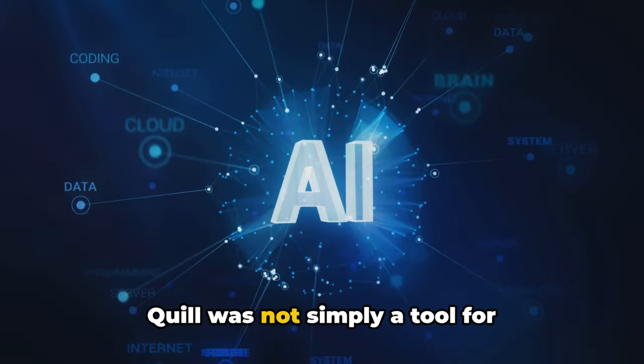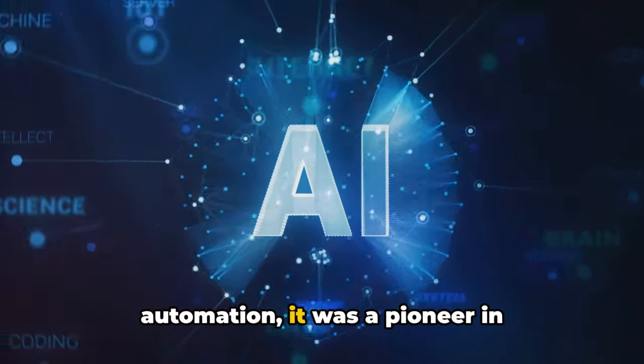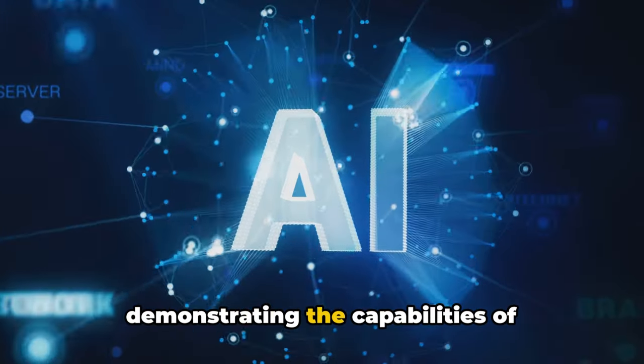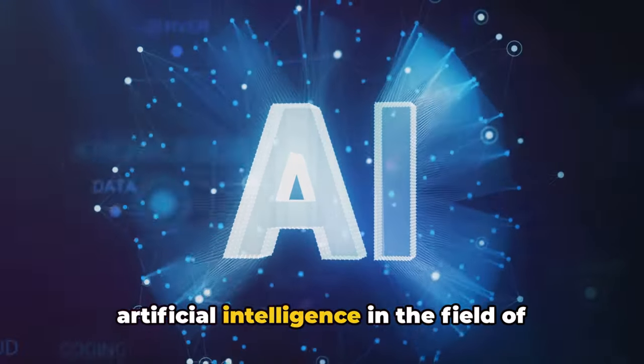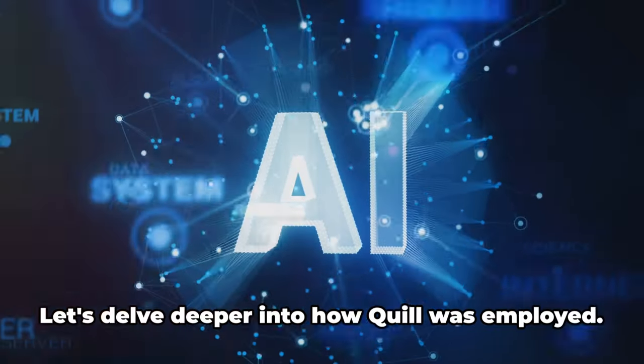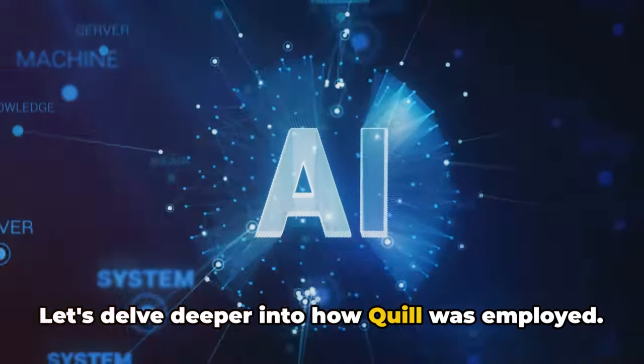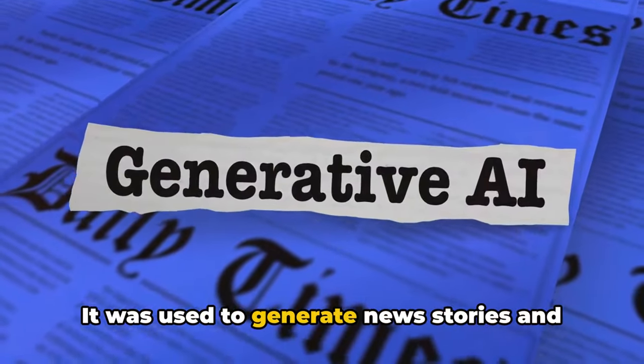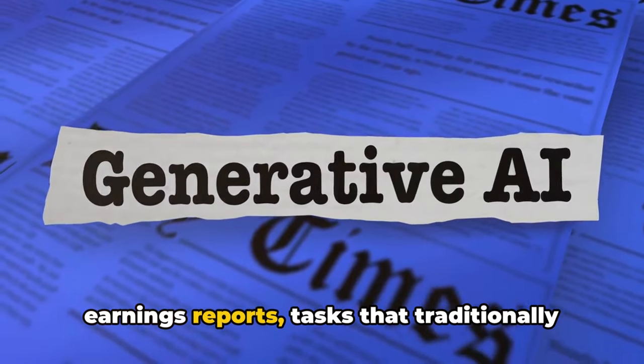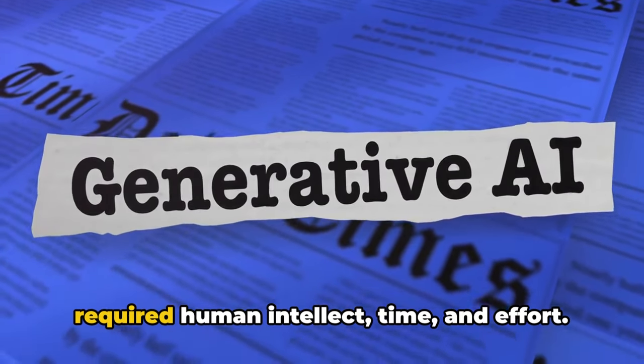Quill was not simply a tool for automation. It was a pioneer in demonstrating the capabilities of artificial intelligence in the field of content creation. Let's delve deeper into how Quill was employed. It was used to generate news stories and earnings reports—tasks that traditionally required human intellect, time, and effort.